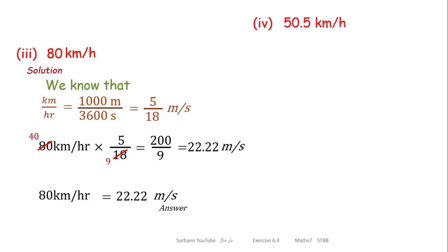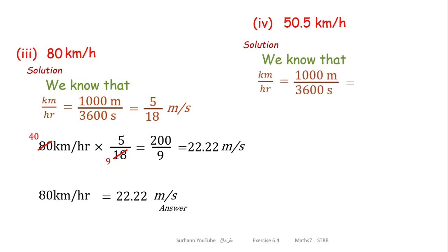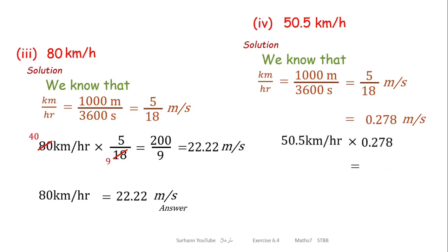Problem number 4 of Exercise 6.4 is a decimal value: 50.5 kilometer per hour. For that, we find that 1 kilometer per hour equals 0.278 meter per second. Multiplying 50.5 by 0.278, we get 14.02 meter per second.